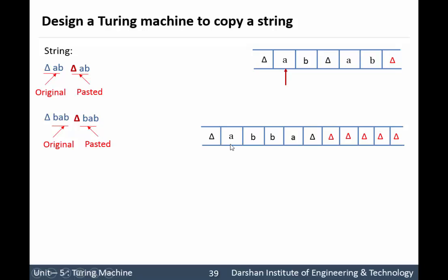Read small 'a' onto the tape and convert it into capital 'A'. Move to the right direction until you find the first delta. Move one step again to the right and we have a blank symbol, so replace this blank symbol by small 'a'. Again move to the left direction until you find the capital symbol, then convert this small 'b' into capital 'B'. Move to the right direction until you find the end of the string. Whenever we encounter the delta that means it's the end of the original string. After that we process 'a', and again after 'a' we have the blank space, so replace this blank space with small 'b'.